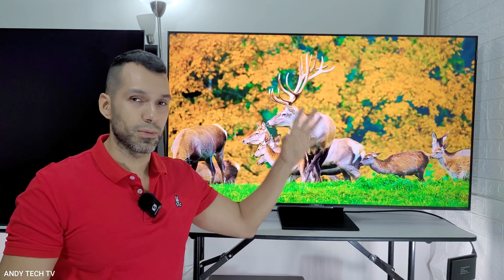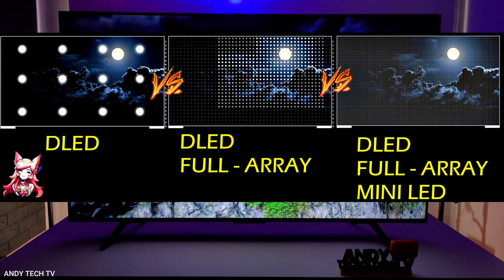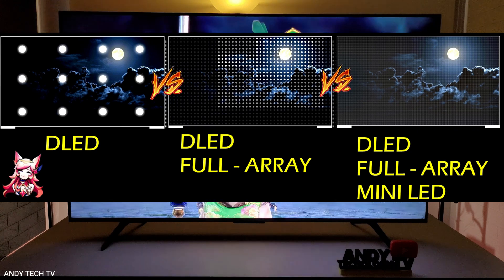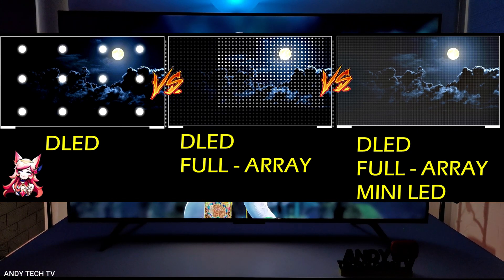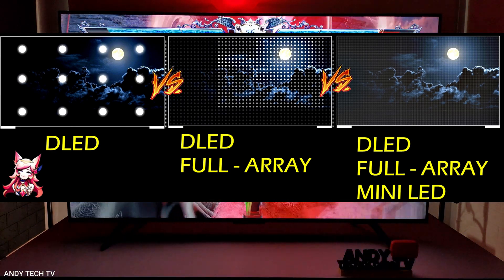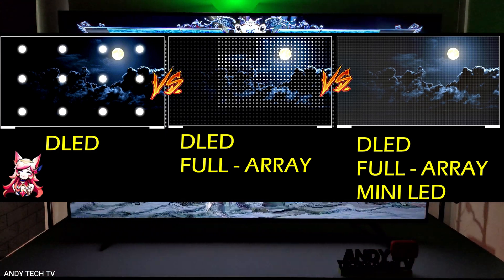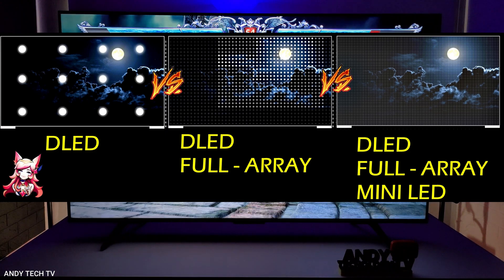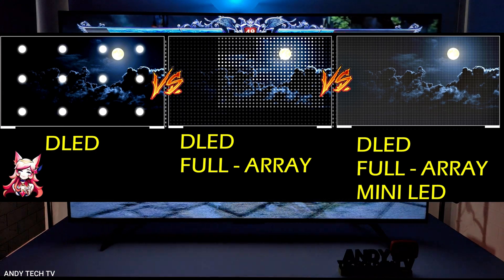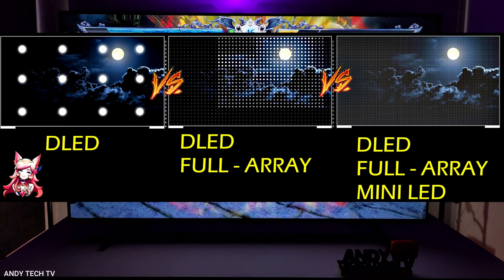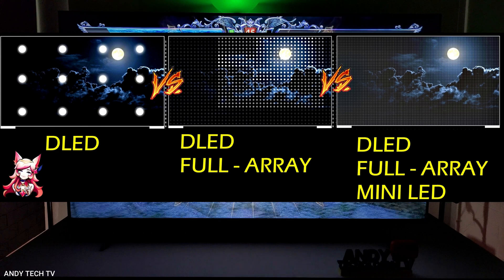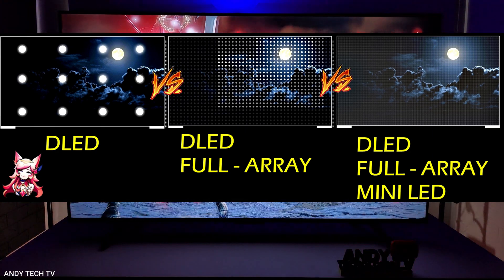The hierarchy would be like this: DLED, which would be basic direct LED — larger LED bulbs spread across the screen in lesser quantity. From there would follow DLED with full array, which is direct full array or full matrix LED — a greater number of LED bulbs located uniformly throughout the back of the screen, also with the local dimming function. And from there, DLED full array mini LED — a complete matrix with much smaller LED bulbs, a greater number of them, and local dimming, achieving much better performance in dark scenes.